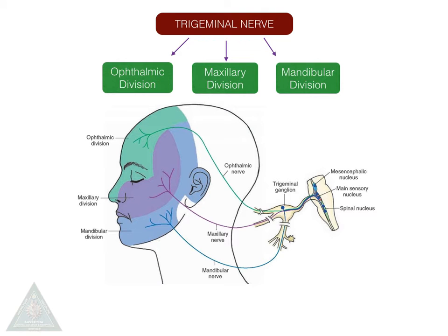These are the three divisions of the trigeminal nerve — namely the ophthalmic, maxillary, and mandibular — and the area of distribution can be seen in this diagram.